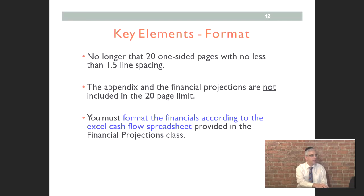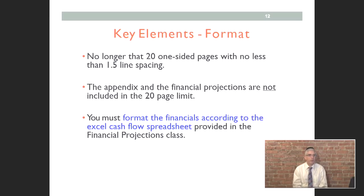Just some basic housekeeping to make it easier for the judges to have everything in one format: we want it to be no longer than 20 one-sided pages, with no less than 1.5 line spacing — it shouldn't be too crunched together. The appendix and financial projections are not included in the 20-page limit; you can add as much supporting documentation as you want. The financials should be formatted according to the Excel cash flow spreadsheet provided in the financial projections class — an Excel worksheet showing first-year startup costs, first-year monthly projections, and second-year quarterly projections.